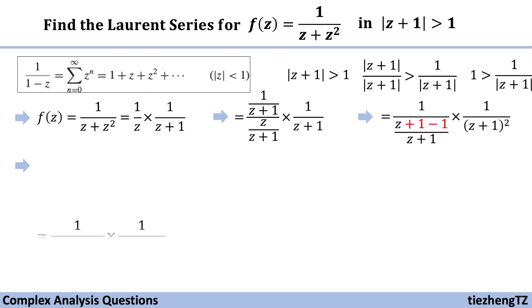So now we can reorganize this equation into 1 over 1 minus 1 over z plus 1 and then times 1 over z plus 1 square. So now you can see in the first part, the denominator part, we have 1 minus z.